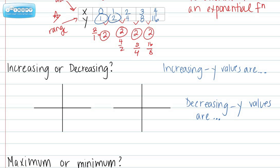Now an exponential function can be increasing or decreasing. When it's increasing, the y values are increasing, getting larger and larger. So an example would be a function that looks like this. Y values start really small and then they get large very quickly.